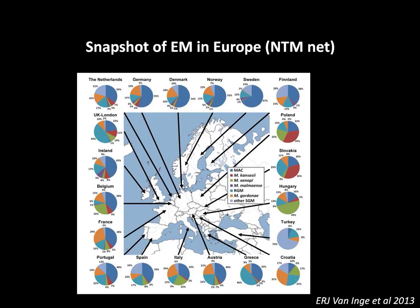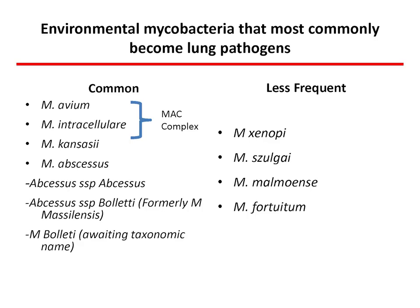Dr. Bagner showed a nice snapshot about NTM in Europe. The ENMT group showed that MAC was predominant in Europe, followed by Kansasii — more or less the same in the United States. MAC is on top, followed by M. abscessus. It's interesting to distinguish between common and less frequent mycobacteria.